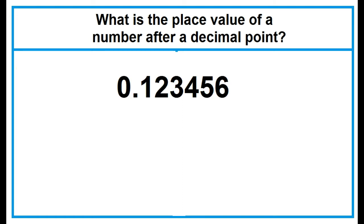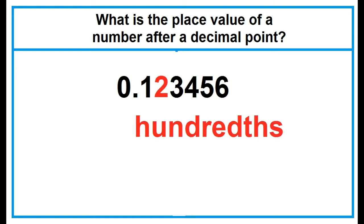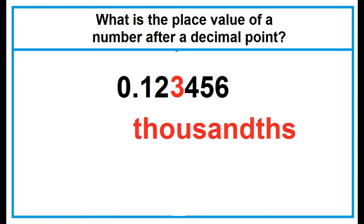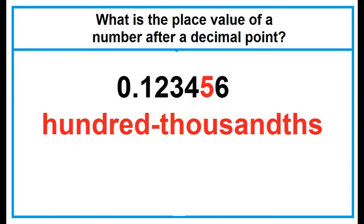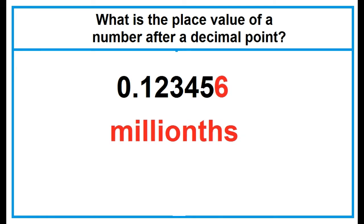Example: 0.123456. The place value of 1 is tenths. The place value of 2 is hundredths. The place value of 3 is thousandths. The place value of 4 is ten-thousandths. The place value of 5 is hundred-thousandths. And the place value of 6 is millionths.